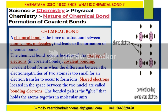In this class today, we study physical chemistry — specifically the nature of chemical bond and the formation of covalent bonds. The electrons located in the space between the two nuclei are called bonding electrons. The bonded pair is the glue that holds the atoms together in molecular units.